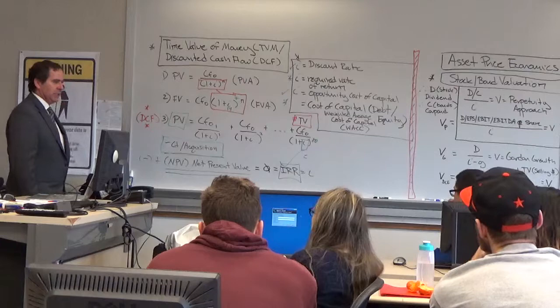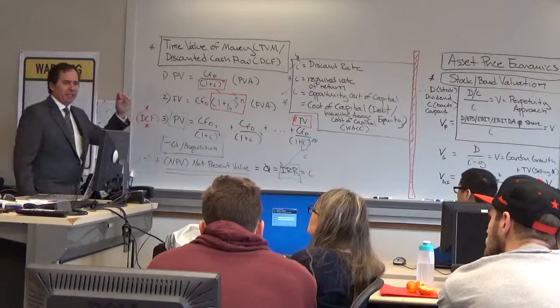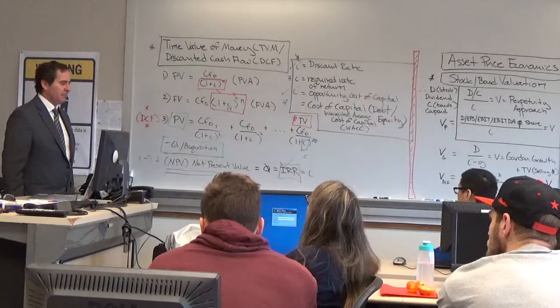Then I'm going to subtract out the cost, or the acquisition cost, and I'm going to get a net present value. If the net present value is positive, I'm going to accept it. If it's negative, I'm going to reject it.